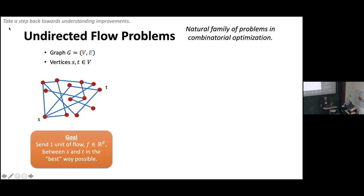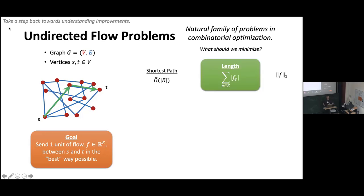We broaden the set of objectives we consider over routing problems. Rather than sending as much flow as possible, we send one unit in the best way. Depending on the objective, we get different problems. On one hand, we might minimize the L1 norm — the total length or sum of flow on every edge. A unit ST flow decomposes into a distribution over ST paths; minimizing length means picking shortest paths. We can solve this in nearly linear time through a local greedy algorithm starting at S and incrementally computing distances.